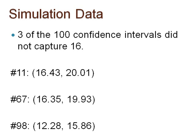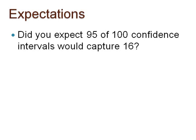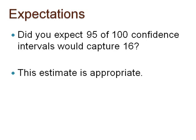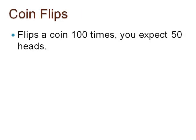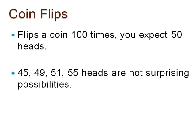Did you expect that because we constructed 95% confidence intervals, 95 of the 100 intervals would capture 16, and in turn 5 would not? If so, this estimate is appropriate. We expect 95 of the 100 intervals to capture 16, but we understand that that will not always happen. When you flip a coin 100 times, you expect 50 heads — would you be terribly shocked if you ended up with 45, or 49, or 51, or 55 heads?